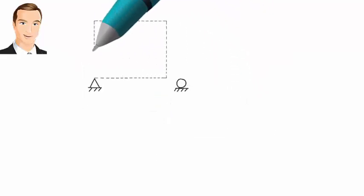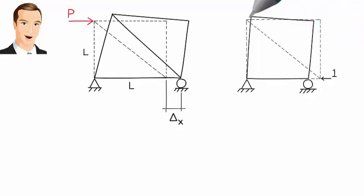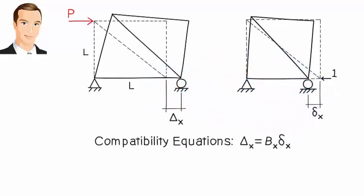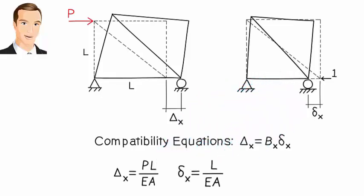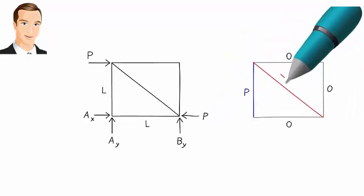By removing Bx from the truss, we permit joint B to displace horizontally. Let's call this displacement delta x. Now, we place a unit load in the direction of Bx at joint B, causing the truss to displace. We refer to this displacement as lowercase delta x. Then we can write the compatibility equation. Since these are displacements in a statically determinate truss, we can calculate them using the virtual work method. When calculated, delta x comes out to be PL over EA, and lowercase delta x equals L over EA. So Bx can be easily calculated using this equation: Bx equals P. Now that we know the redundant force, we can analyze the truss using the method of joints to determine the remaining member forces and support reactions.